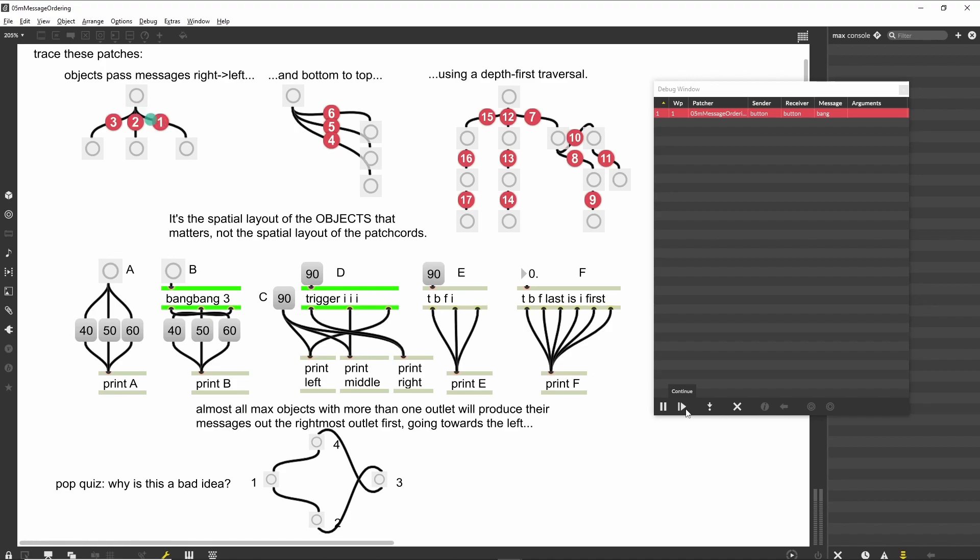The debug window tells us that a bang message has been intercepted by a breakpoint. Moreover, it tells us which breakpoint was tripped, the name of the patcher, and what class of object the sending and receiving object was. In this case, both are button objects.